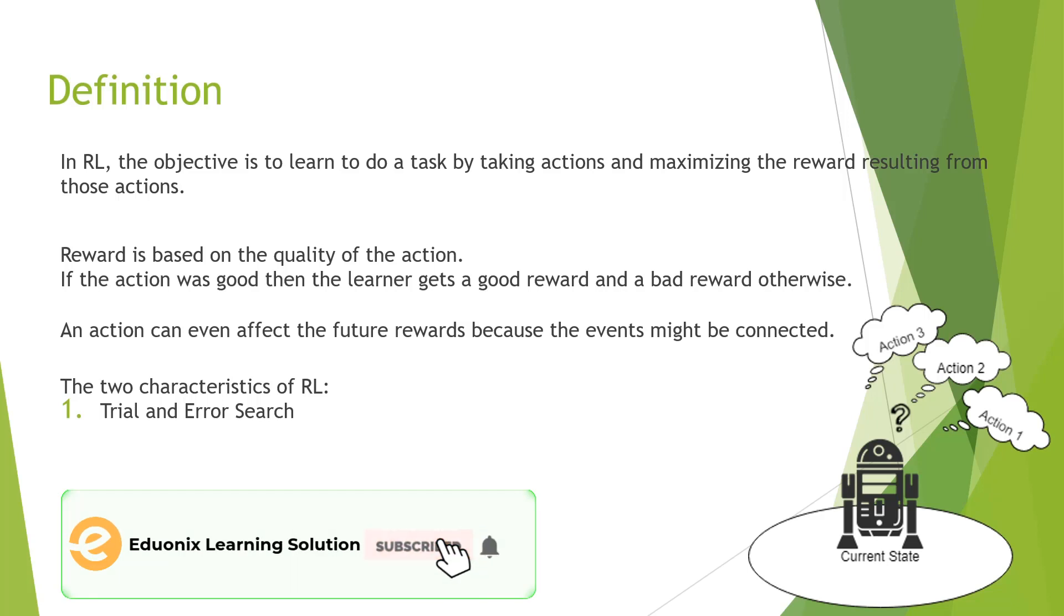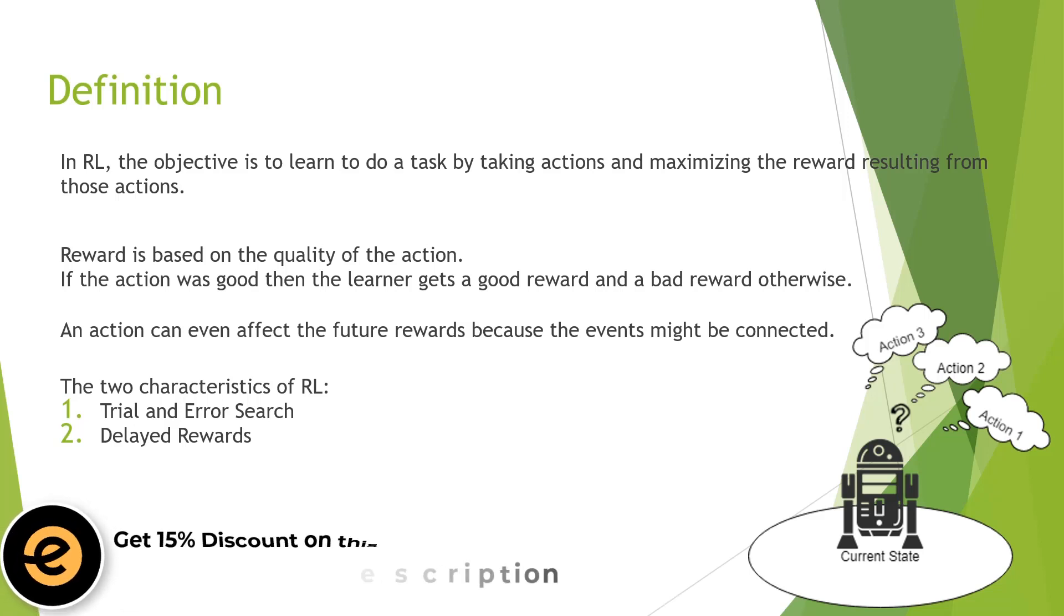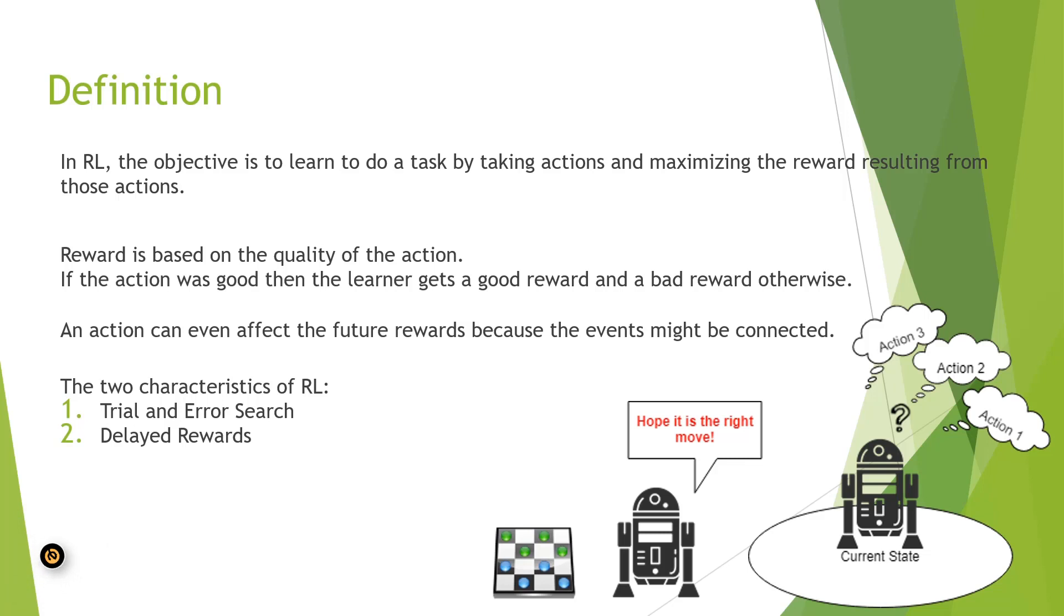It can happen that the agent gets a reward only after it goes through many different states and taking different actions. Take the example of a game of chess. Sometimes it might be difficult to know if a particular move was good or bad until you win or lose the game.